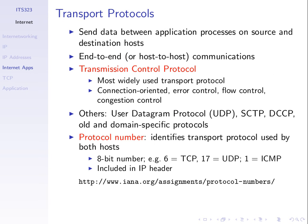Transport protocols are there to support communications between processes — application processes. An application runs as a software process on your computer, and transport protocols allow communication of data between a process on my computer and a process on the server computer. The transport layer and application layer are host-to-host or end-to-end communications — the routers are not involved, they just forward the data. There are different transport protocols, but the main one to be aware of is TCP, the Transmission Control Protocol.